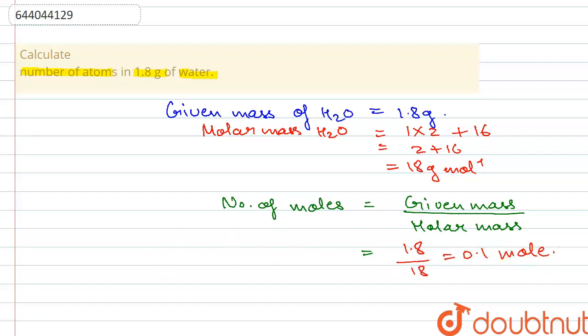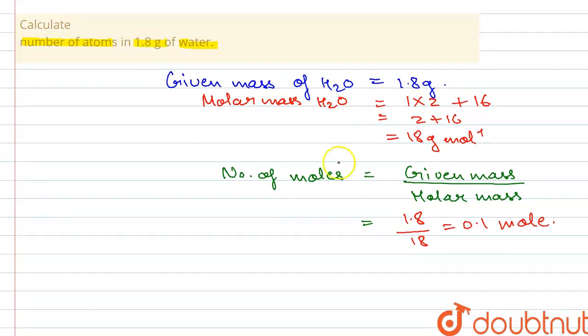moles. So this is the number of moles present in 1.8 grams of water. Now, if you see clearly, they are asking us for the number of atoms in it. According to the mole concept, one mole